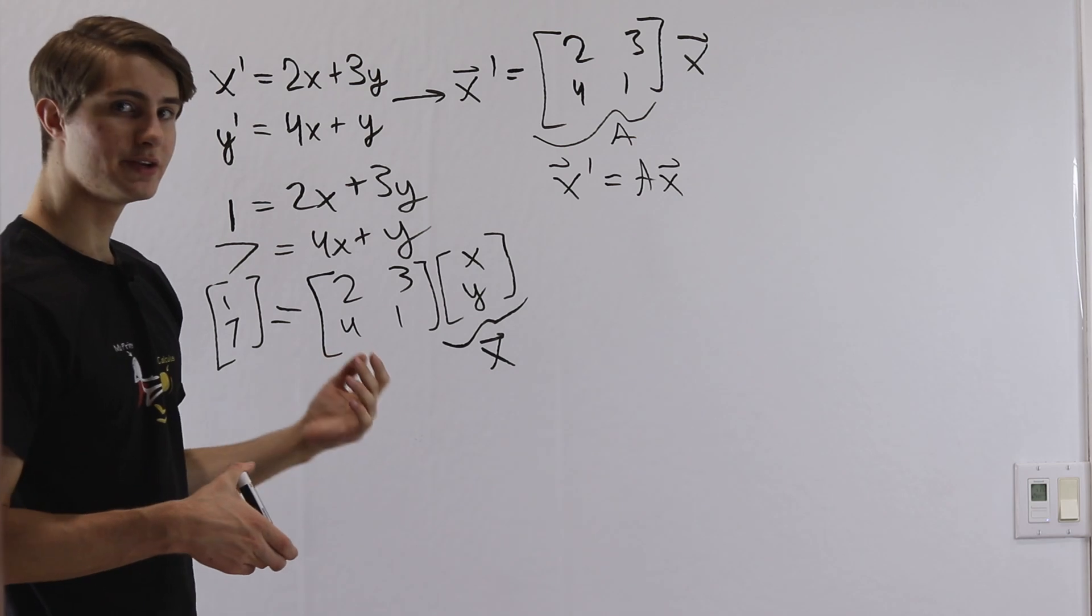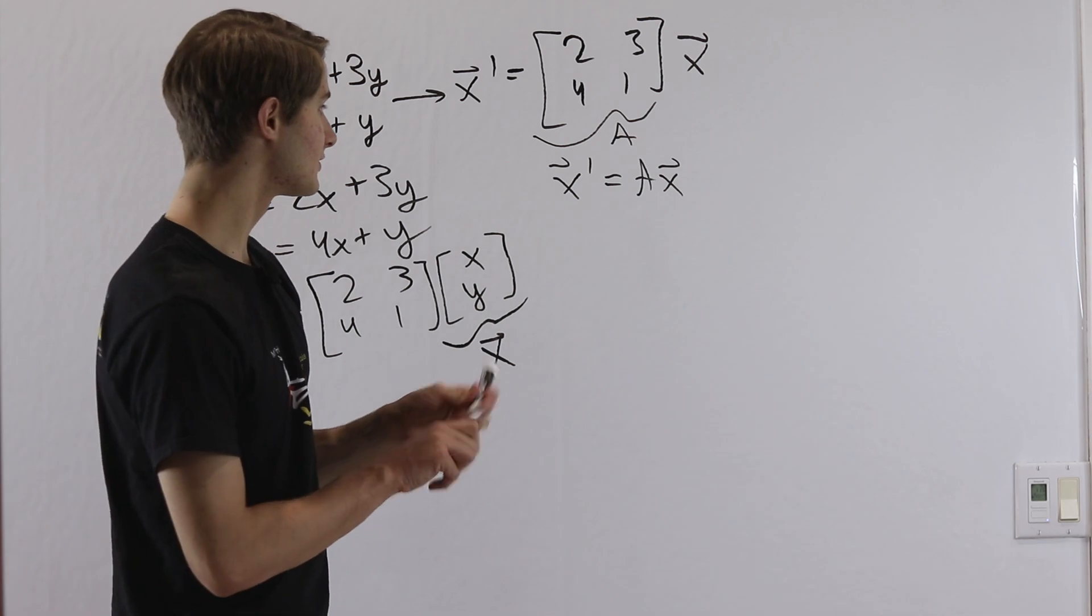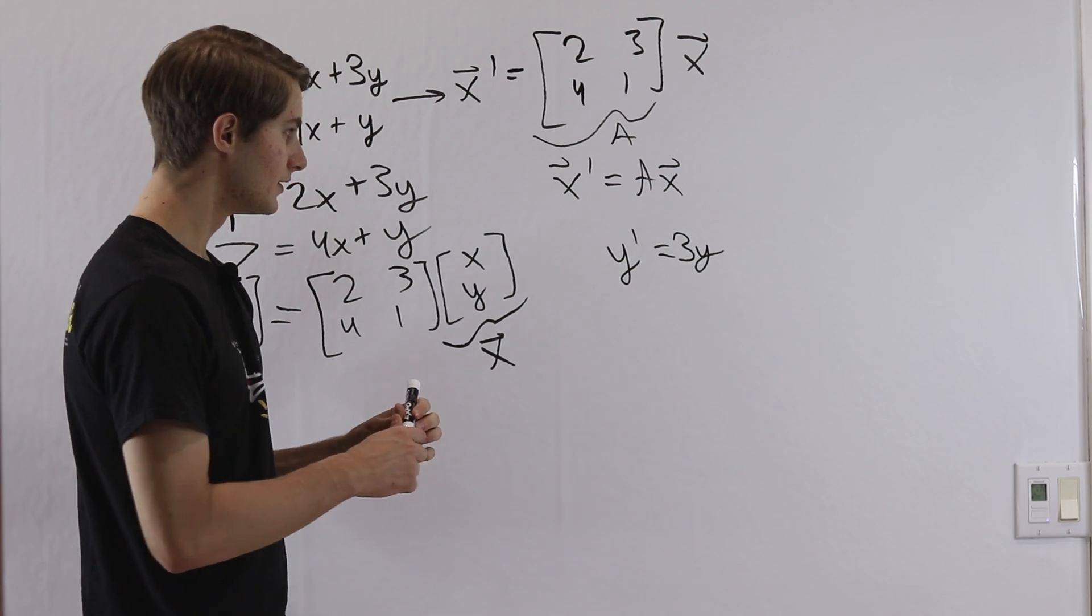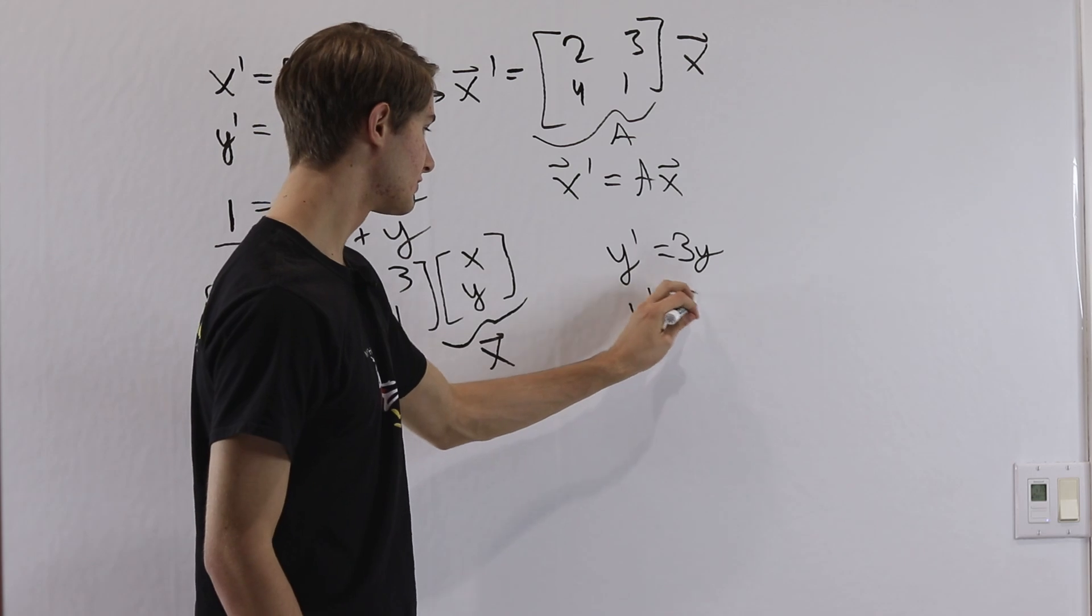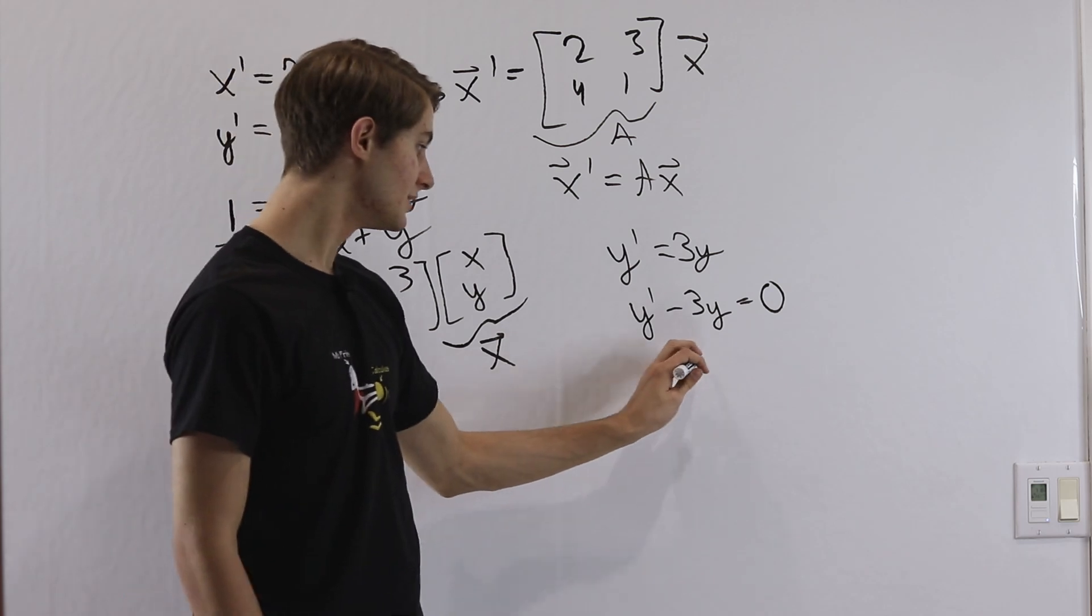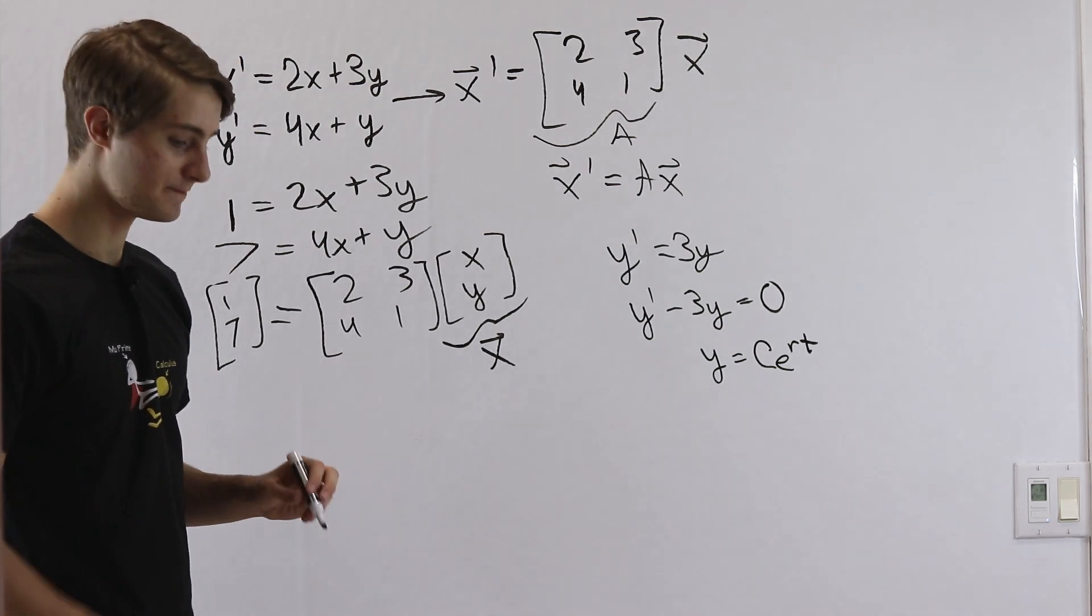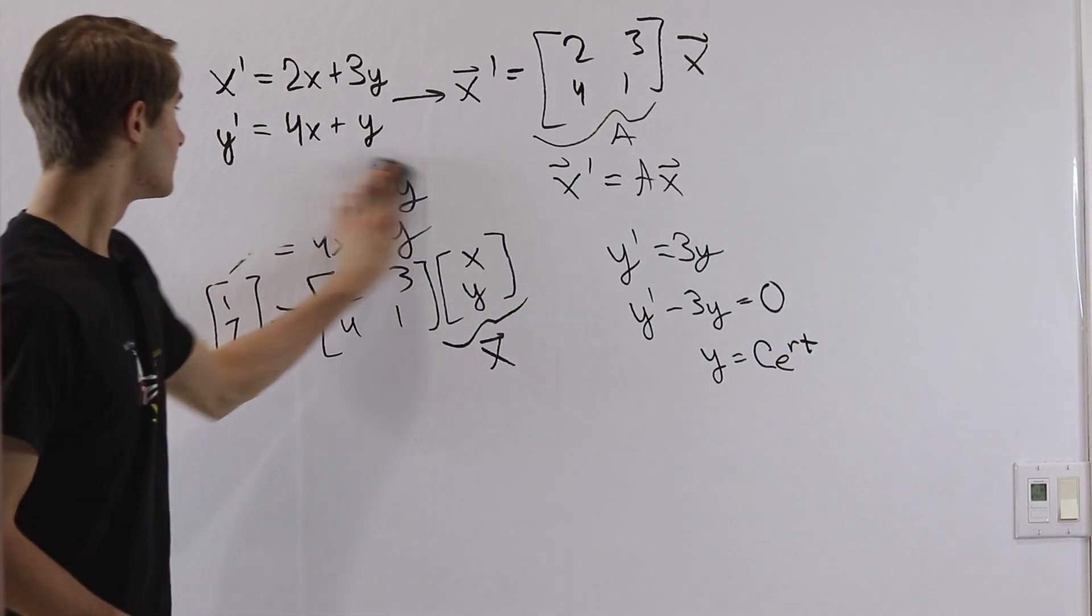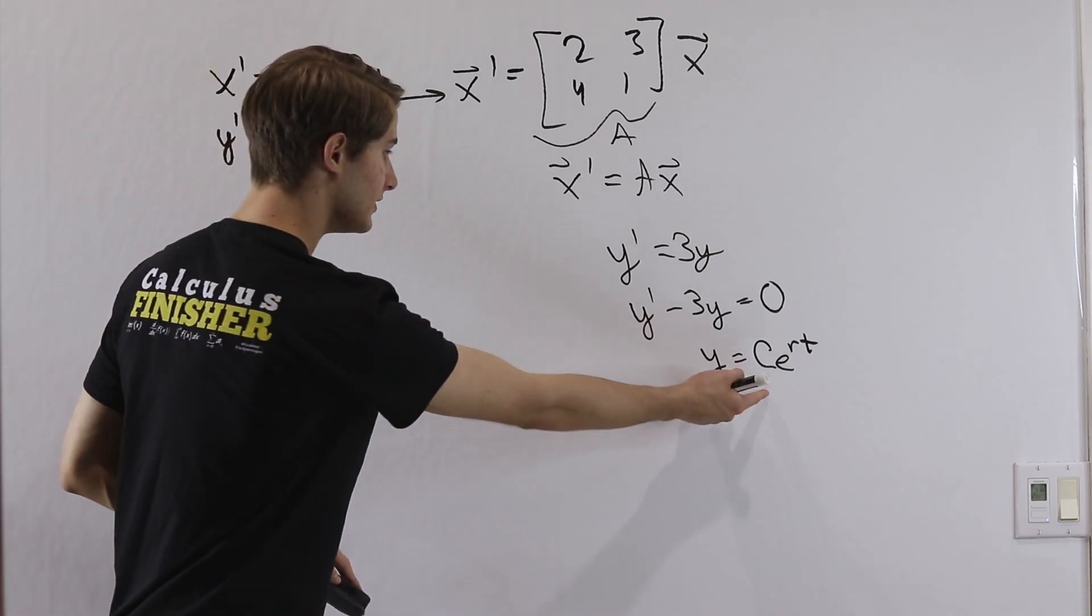And one of the things that we might notice at this point is that this differential equation here kind of reminds us of something else, which is if we think about for example y prime equals 3y. If we wanted to solve a differential equation like this, what we can do is subtract 3y on both sides. So we have y prime minus 3y equals 0, and then this is a homogeneous differential equation. So we would guess y equals some constant c times e to the rt. And then we can go through the equation to try to find the correct value of r. So when we look at the equation that we have here maybe we want to think about applying this same kind of idea.